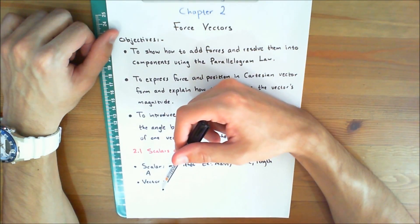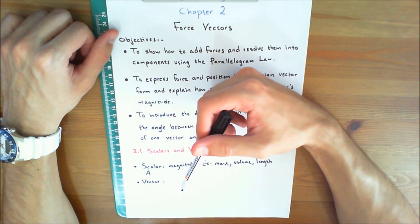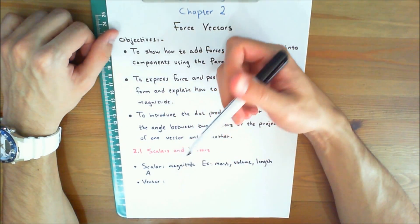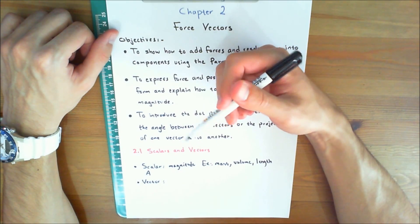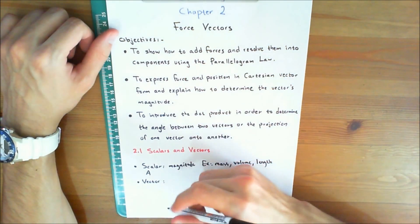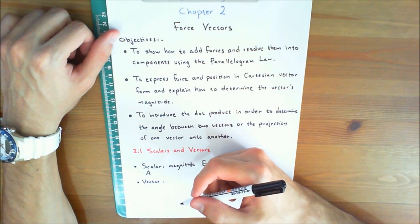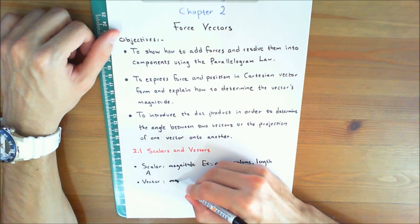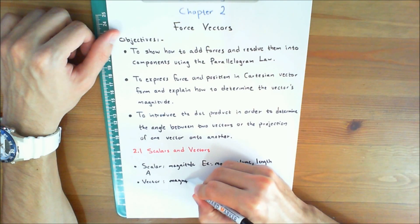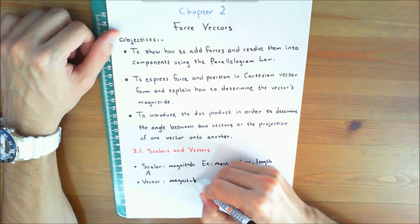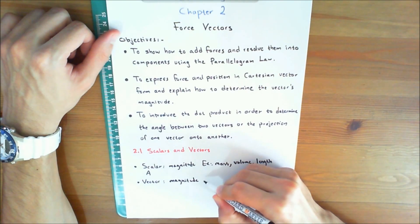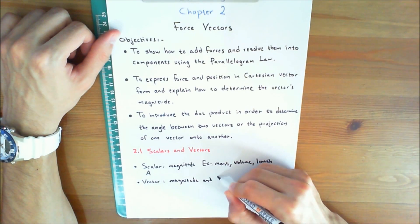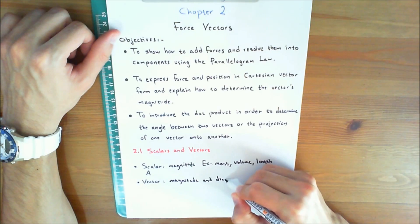A vector is a quantity that has both a magnitude and a direction. Those are the two keywords that you need to remember: magnitude and direction.